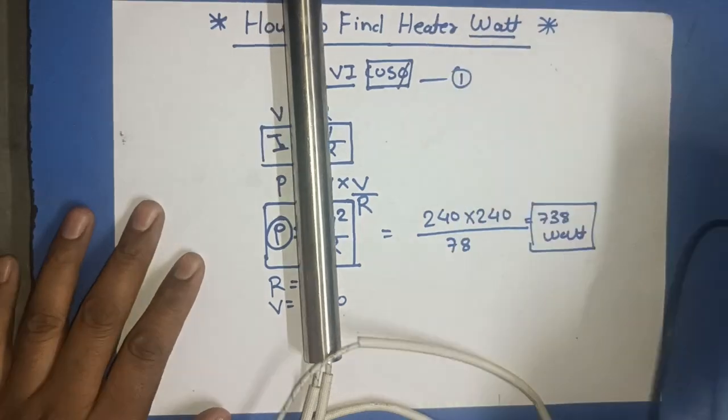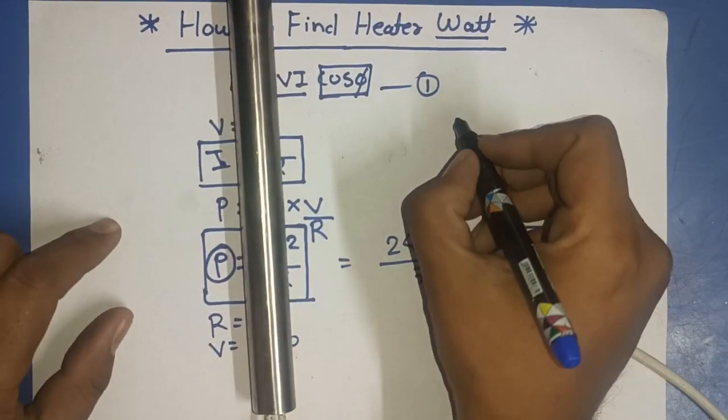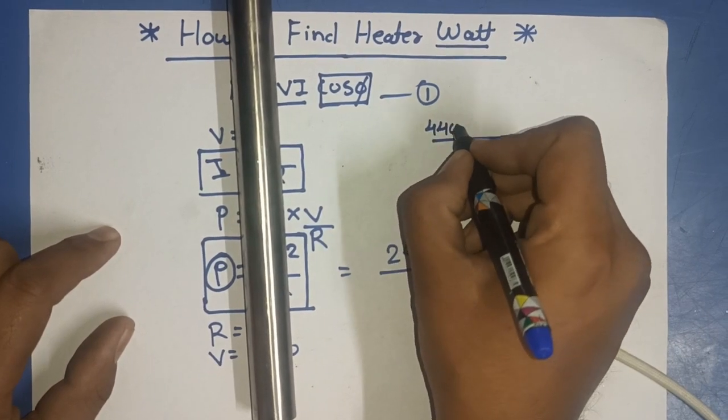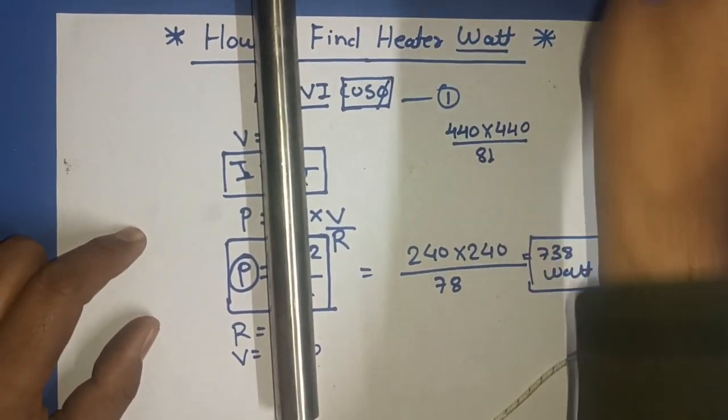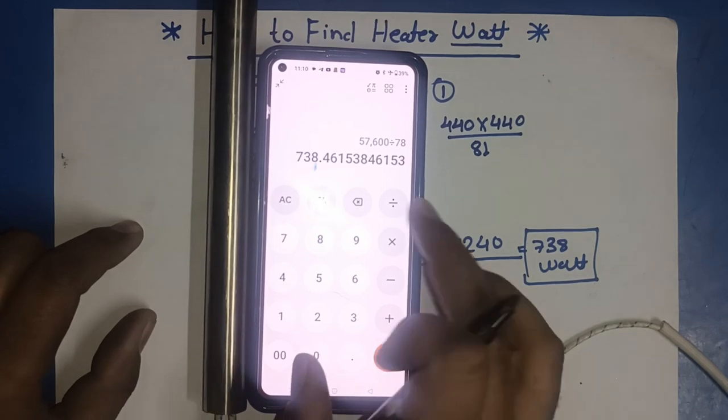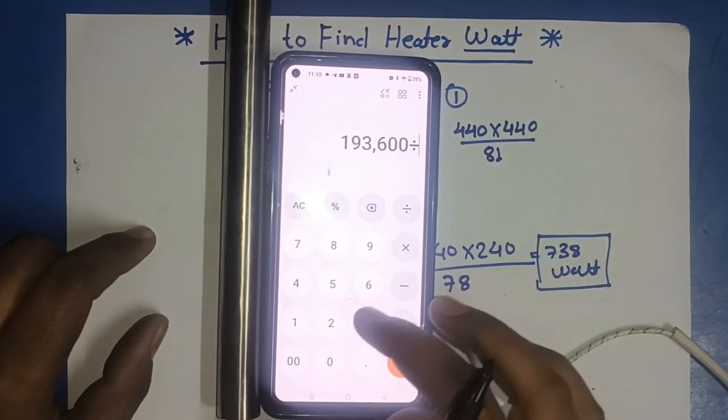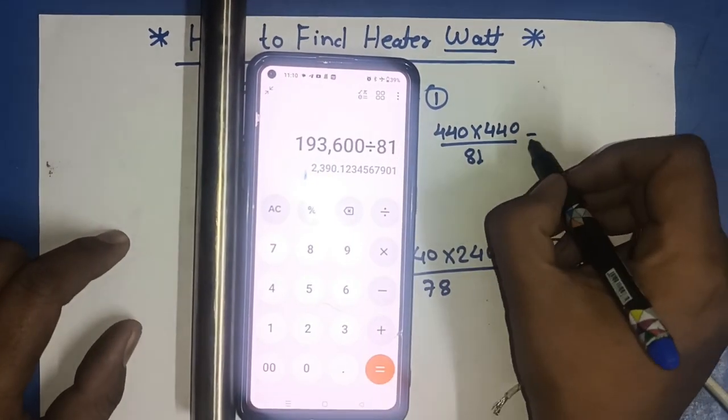We note down resistance is 81 ohm. So, resistance is 81. 440 operating voltage. 440 multiply by 440. Just we solve this value. 440 multiply by 440. 1936000 divide by 81.